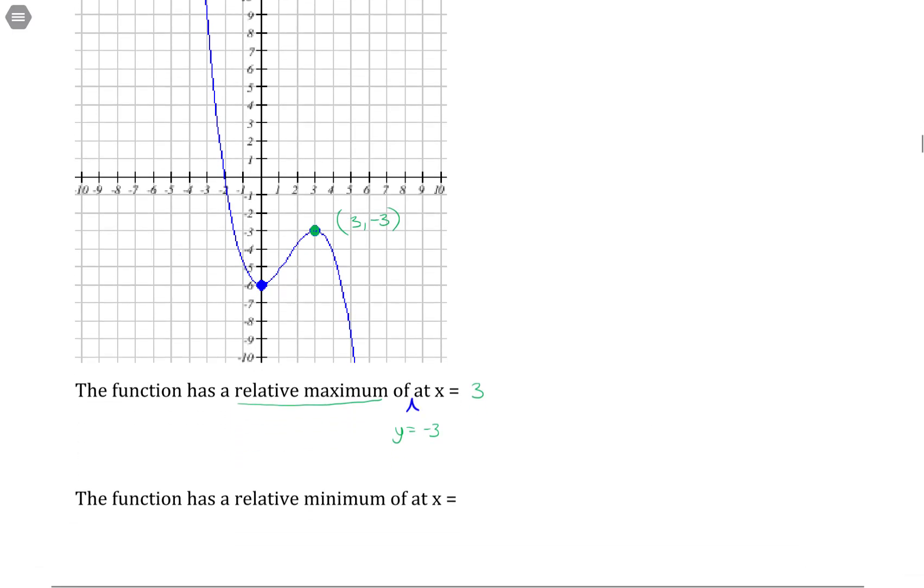The function has a relative minimum. So I'll switch and use a different color for the relative minimum. So relative minimum, in contrast, is a value that is the smallest over a small window of values.